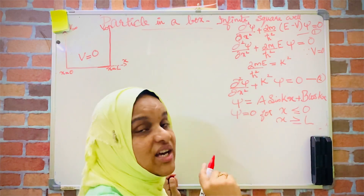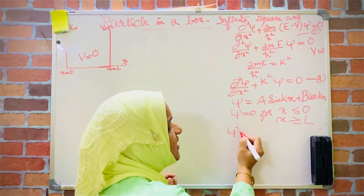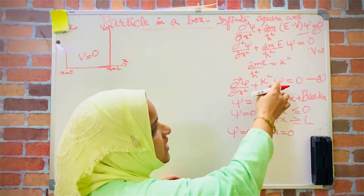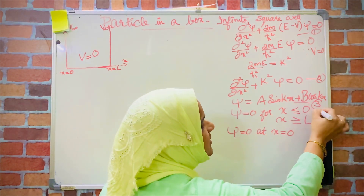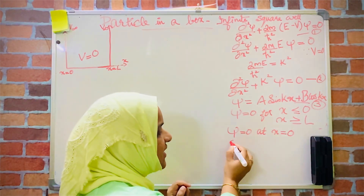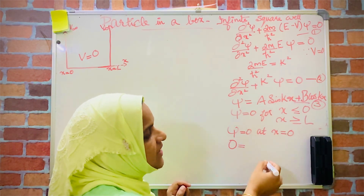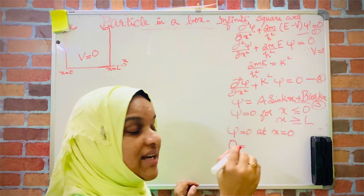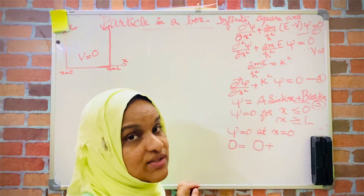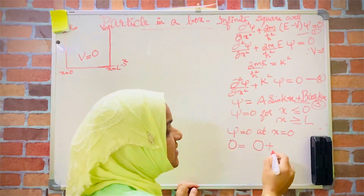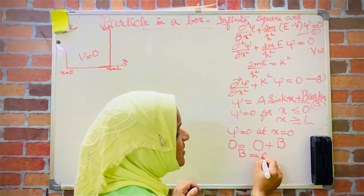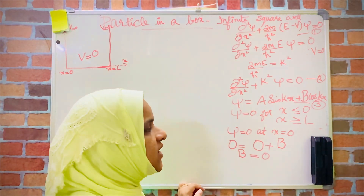From this condition, we take the particular case ψ=0 at x=0. Applying this first boundary condition to equation number 3: ψ(0) = A sin(0) + B cos(0) = 0. Since sin(0)=0, the first term vanishes, and cos(0)=1, so we get B=0. Thus, applying the first boundary condition gives B=0.